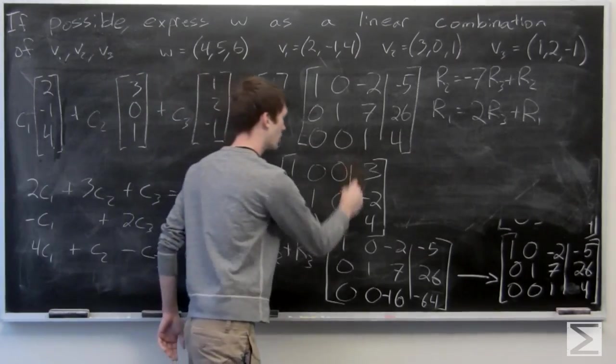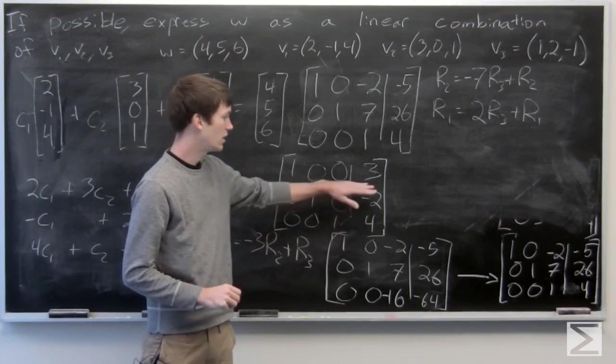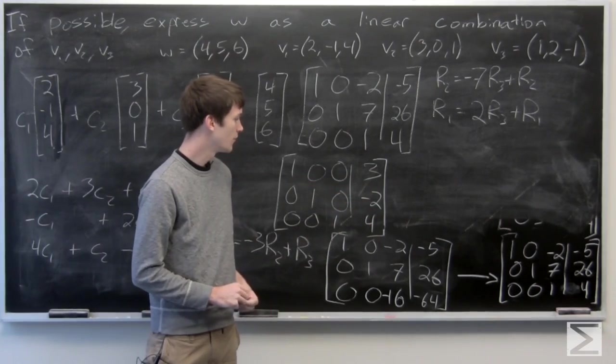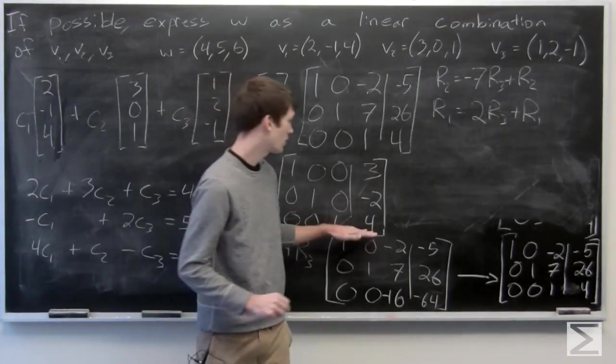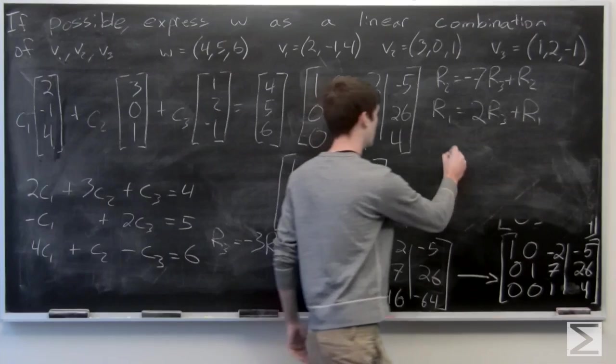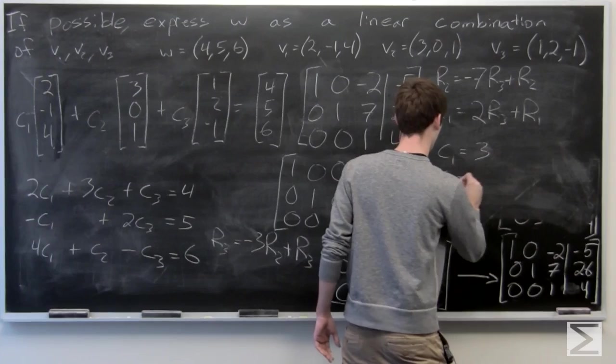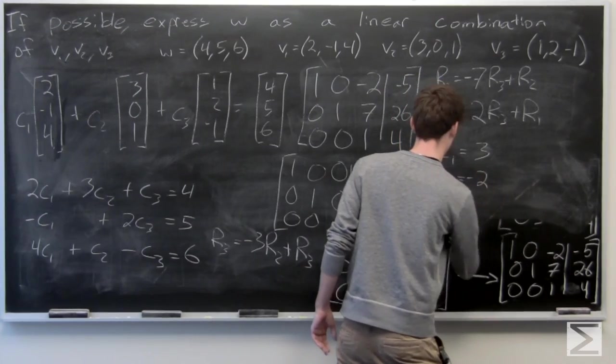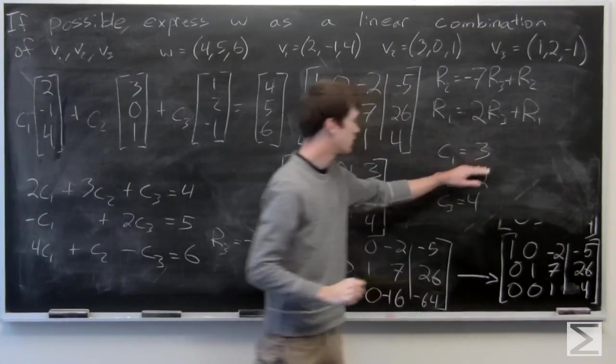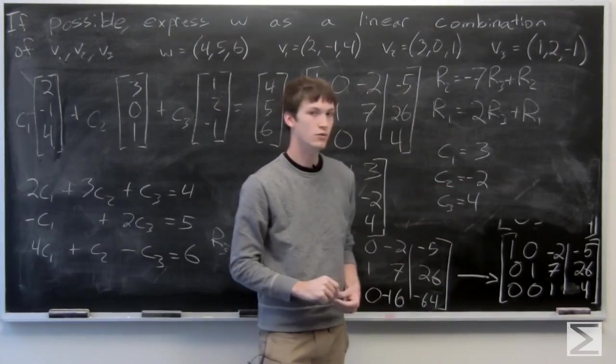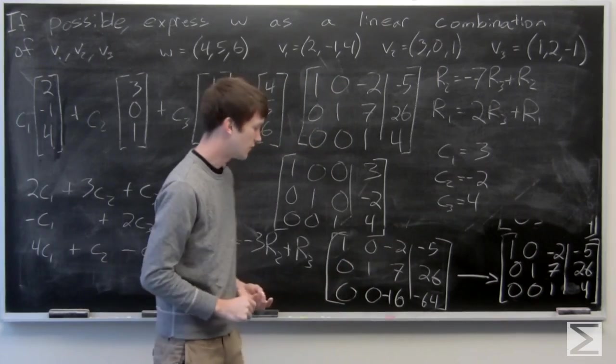So we get our identity matrix augmented with the vector (3, -2, 4). So we see that our c1 is equal to 3, our c2 is equal to negative 2, and our c3 is equal to 4.